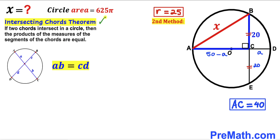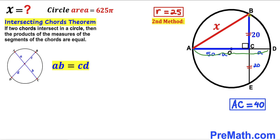Now let's recall the intersecting chords theorem: if two chords intersect inside a circle, the products of their segment lengths are equal. In our diagram, chords AD and BE intersect at point C, giving segments (50 − a) and a on one chord, and 20 and 20 on the other. So we set up the equation: (50 − a) × a = 20 × 20.